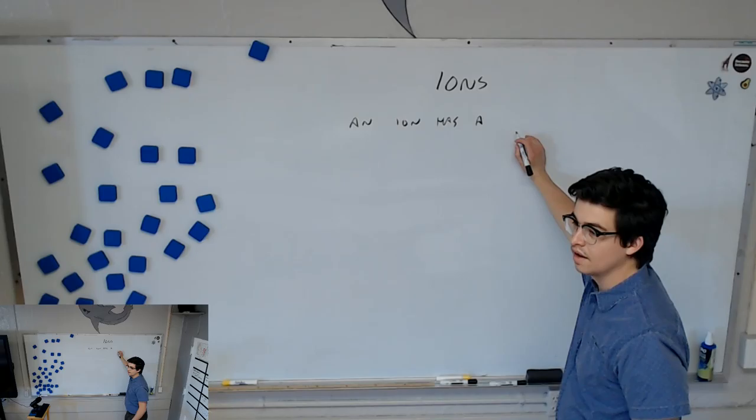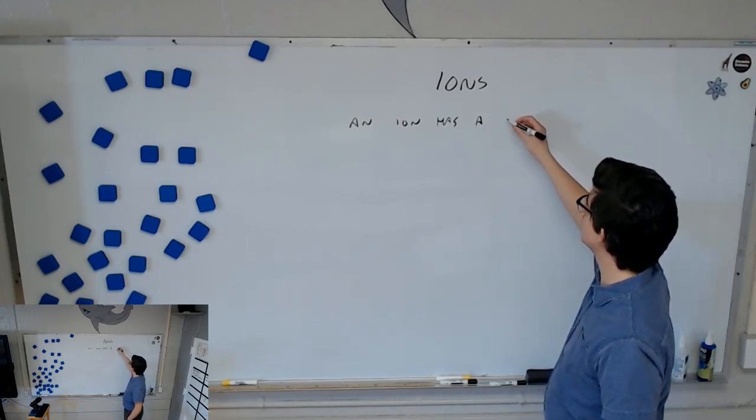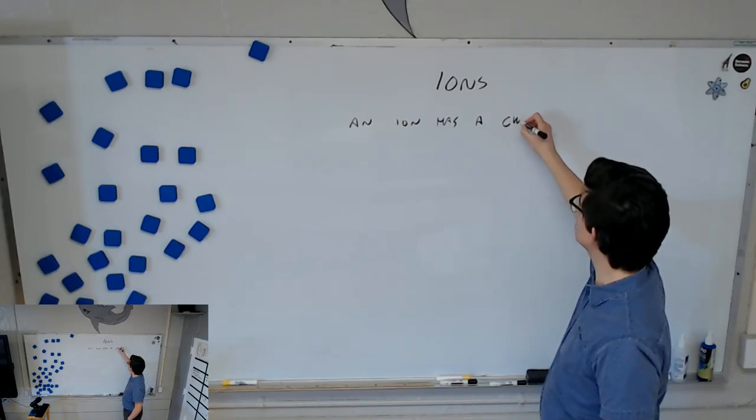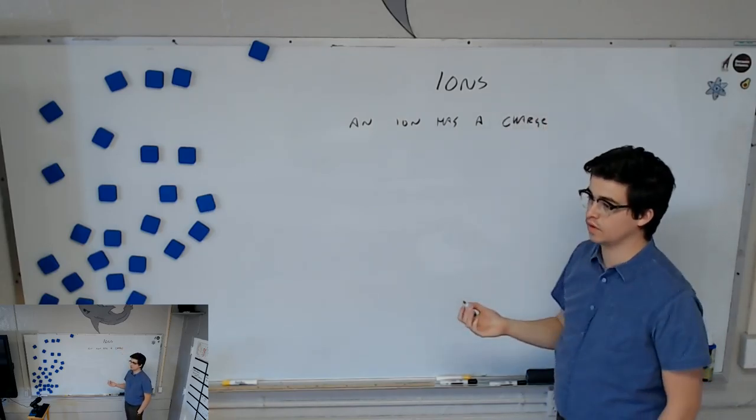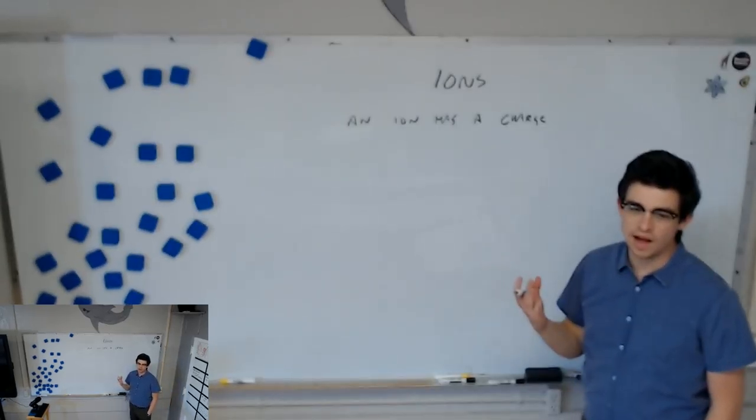An atom or a bonded group of atoms that have a positive or negative charge. Okay, so we can say an ion has a charge. Let's just put charge because it can be either positive or negative, but it has a charge. An ion has a charge. And why would an ion have a charge?